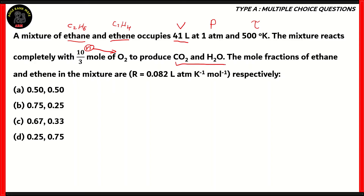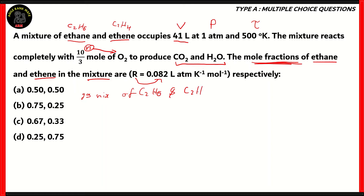The end products are carbon dioxide and water. We need to find out the mole fractions of ethane and ethene in the mixture. We also know the value of R, the universal gas constant, which is given as 0.082 liter atmosphere per Kelvin mole. For the gas mixture of C2H6 and C2H4, we have the volume, pressure, temperature, and universal gas constant. The law that relates all of these quantities is the ideal gas law.